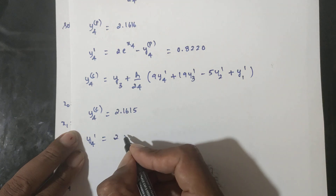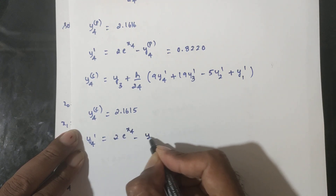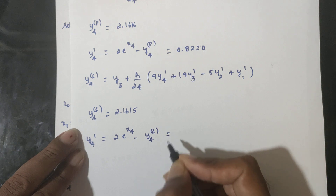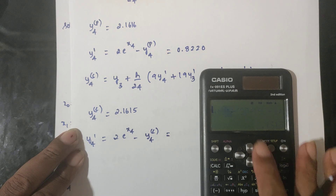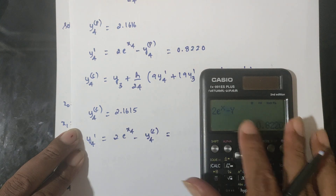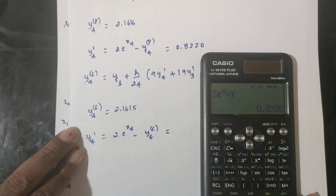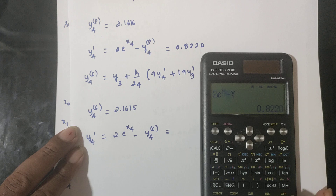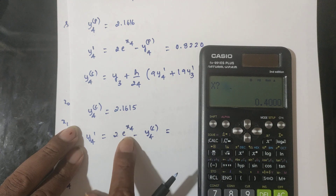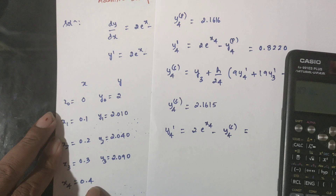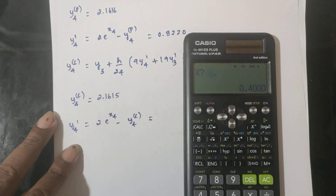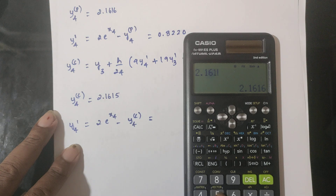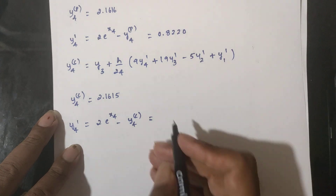Compute 2e^(x4) minus y4C where x4 = 0.4 and y4C = 2.1615. The answer is approximately 0.8 (the derivative value at the corrected point).